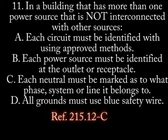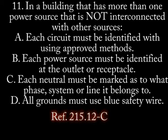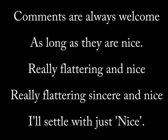Number 11: In a building that has more than one power source that is not interconnected with other sources: A. Each circuit must be identified using approved methods. B. Each power source must be identified at the outlet or receptacle. C. Each neutral must be marked as to what phase, system, or line it belongs to. D. All grounds must use blue safety wire. That finishes up Article 215, feeders.